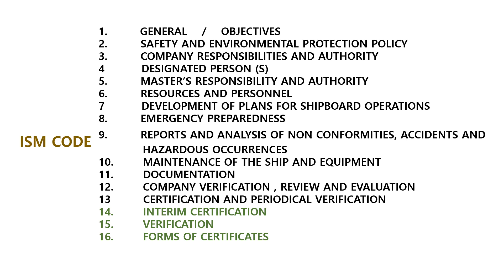This is the ISM code. ISM code consists of chapters 1 through 16. Chapter 1: General and Objectives. Chapter 2: Safety and Environmental Protection Policy. Chapter 3: Company Responsibilities and Authority. Chapter 4: Designated Persons. Chapter 5: Master's Responsibility and Authority. Chapter 6: Resources and Personnel. Chapter 7: Development of Plans for Shipboard Operations. Chapter 8: Emergency Preparedness. Chapter 9: Reports and Analysis of Nonconformities, Accidents and Hazardous Occurrences. Chapter 10: Maintenance of the Ship and Equipment. Chapter 11: Documentation. Chapter 12: Company Verification, Review and Evaluation. Chapter 13: Certification and Periodical Verification. Chapter 14: Interim Certification. Chapter 15: Verification. Chapter 16: Forms of Certificate.